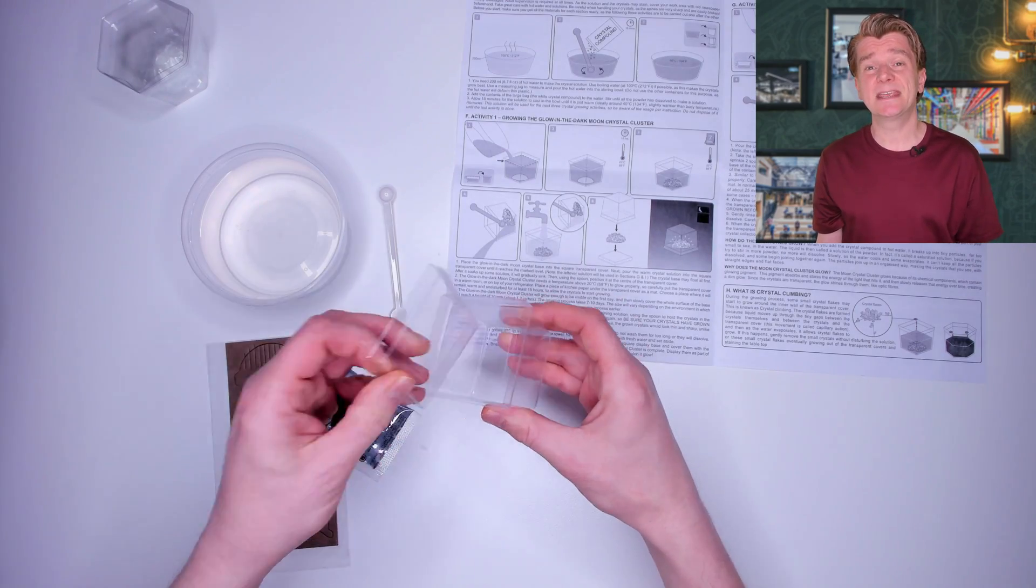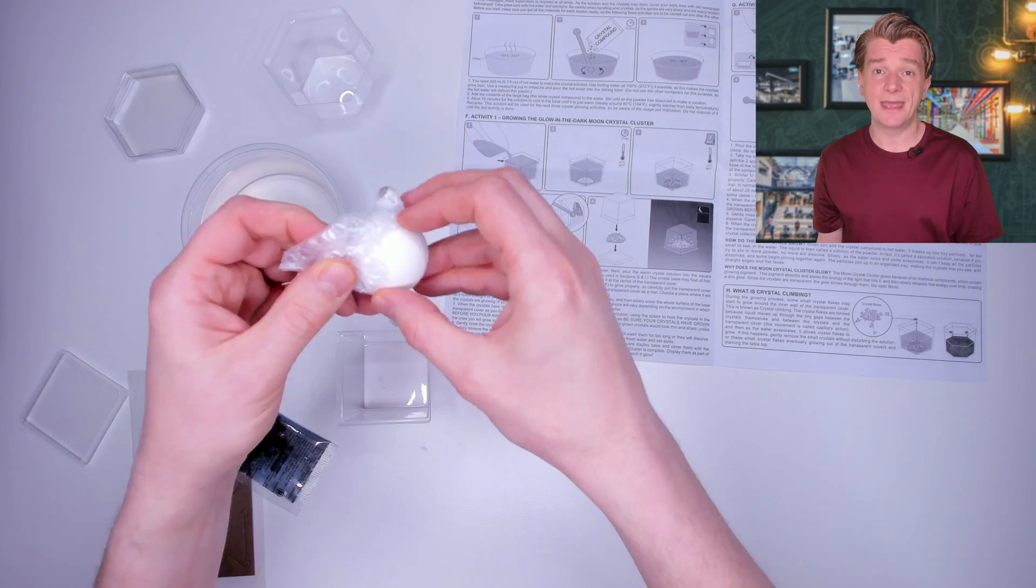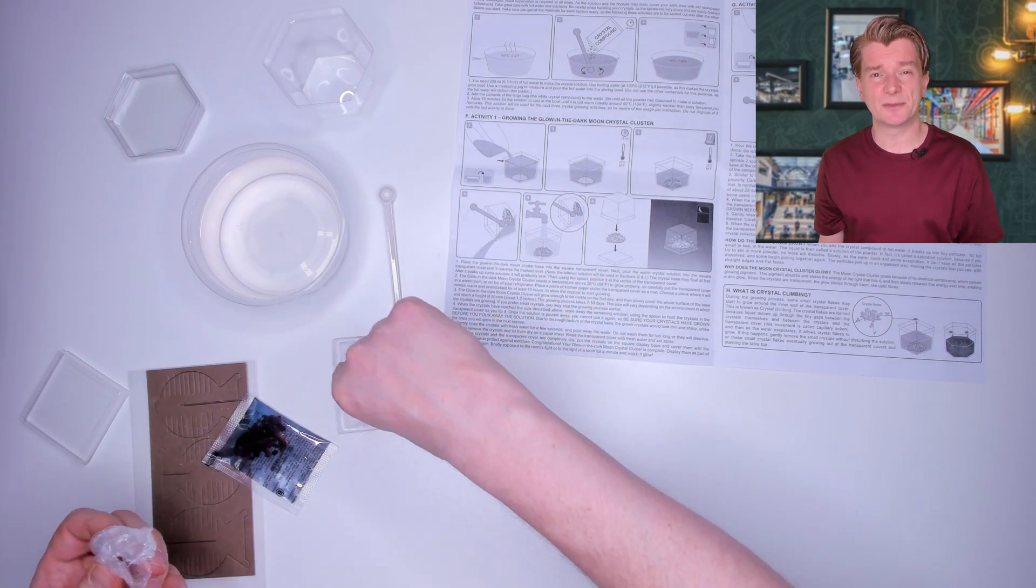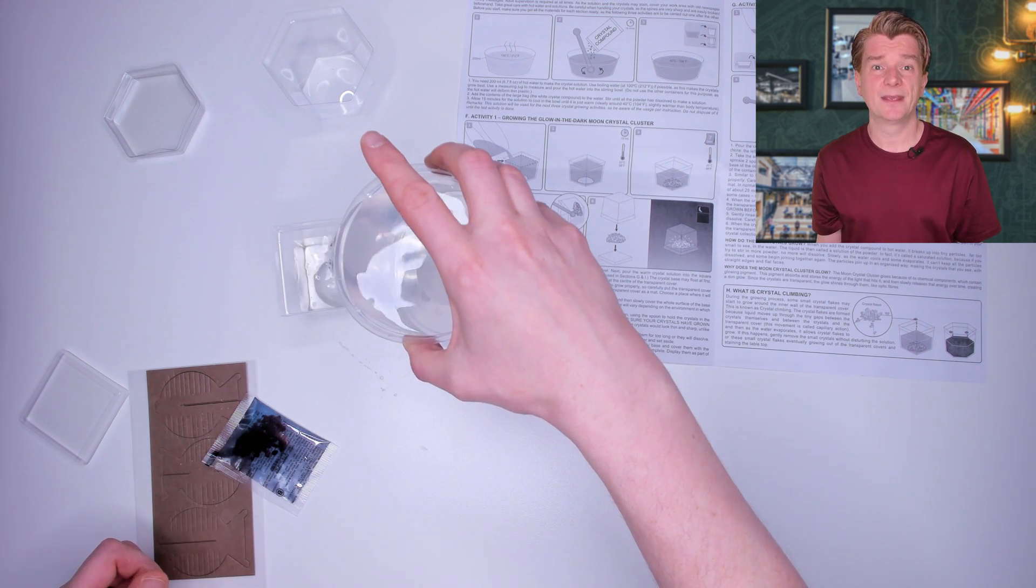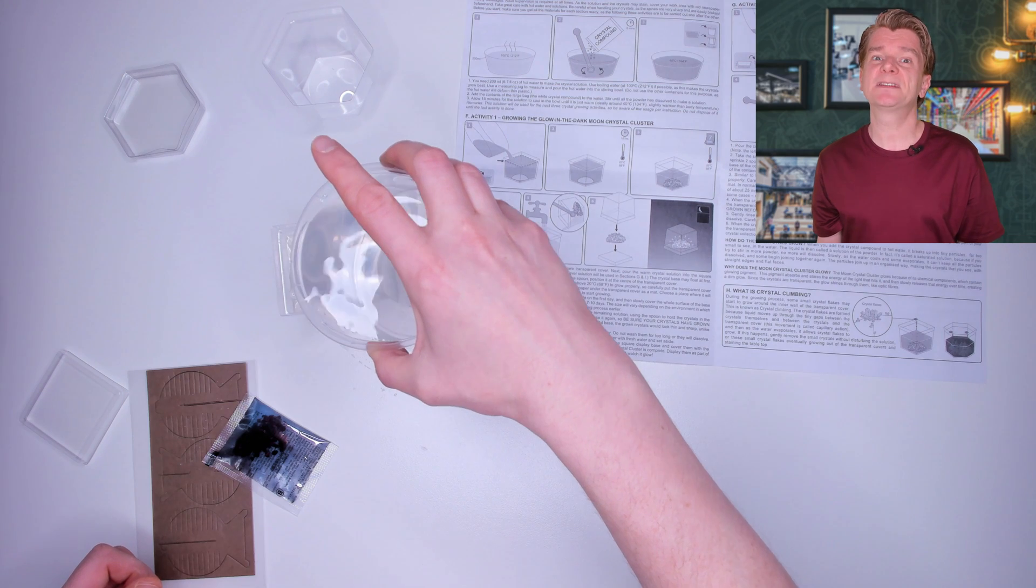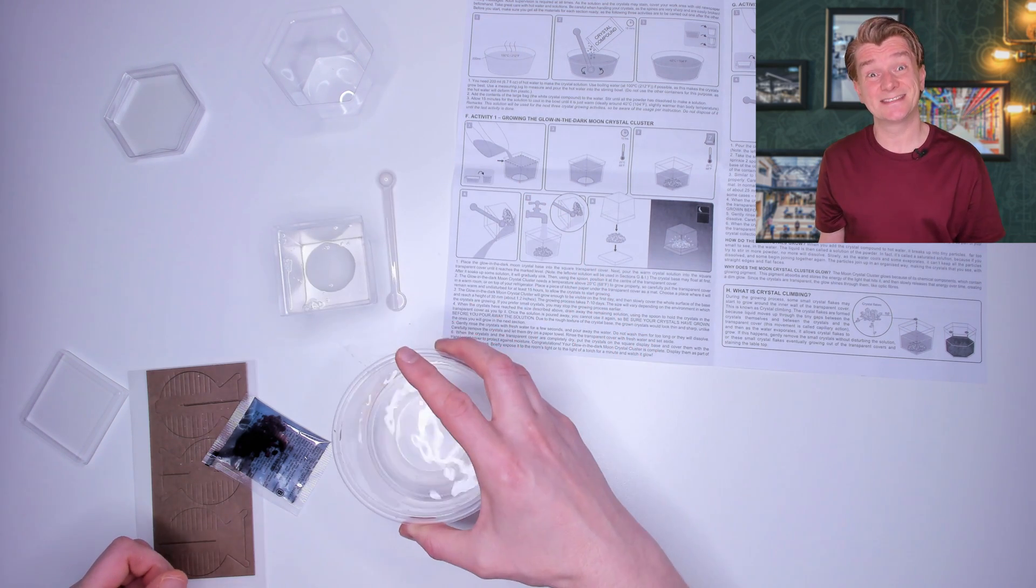First we're taking this giant seed and placing it into the small square container. Then I add in the solution up to the pour line and make sure the seed is in the centre of the container. Then just like the other kit, we have to leave this undisturbed for 7 days. Let's fast forward 7 days and see what comes out.